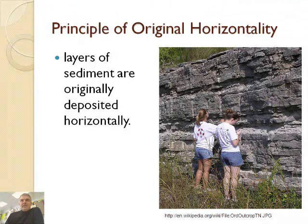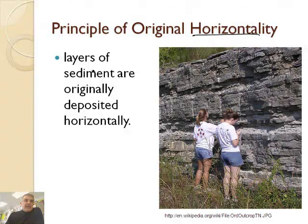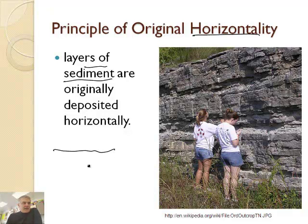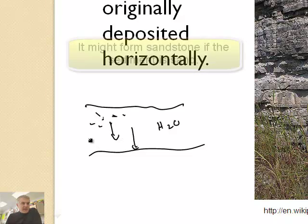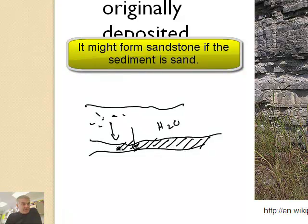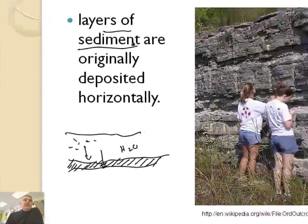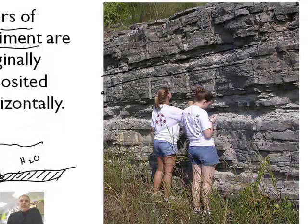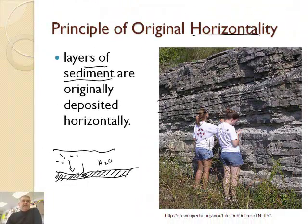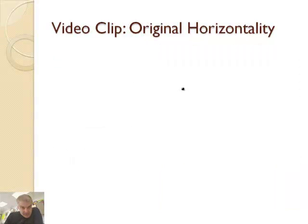Now let's talk about the principle of original horizontality. The word horizontal means flat — like laying in your bed. Basically, layers of sediment were originally deposited horizontally. Sediment has to do with sedimentary rocks: you have a body of water, a bunch of silt settles to the bottom of the ocean or lake, which is typically flat, making a layer that eventually turns into rock like sandstone. These layers are originally deposited horizontally. That doesn't mean they'll always be horizontal, but originally they are. You can see each layer at this outcrop is layered one at a time, horizontally.